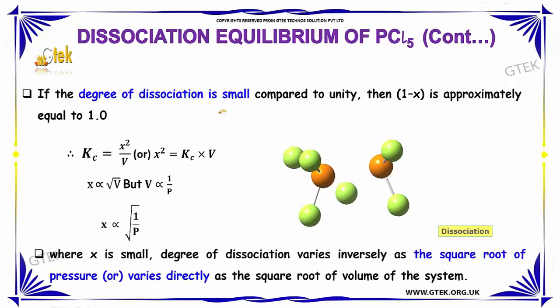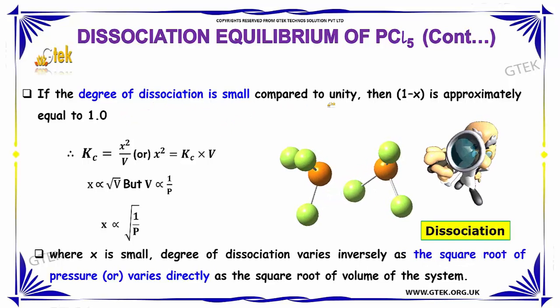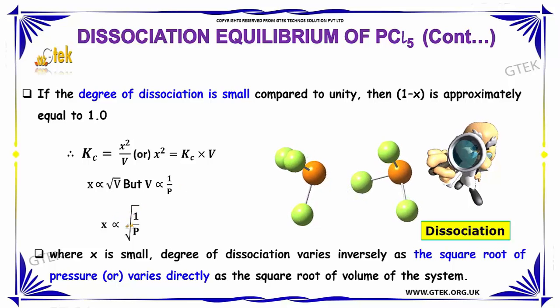If the degree of dissociation is small compared to unity, then 1-X ≈ 1.0. So Kc = X²/V, or X² = Kc × V. X is directly proportional to √V. V is directly proportional to 1/P, so X is directly proportional to √(1/P). When X is small, the degree of dissociation varies inversely as the square root of pressure or varies directly as the square root of the volume of the system.